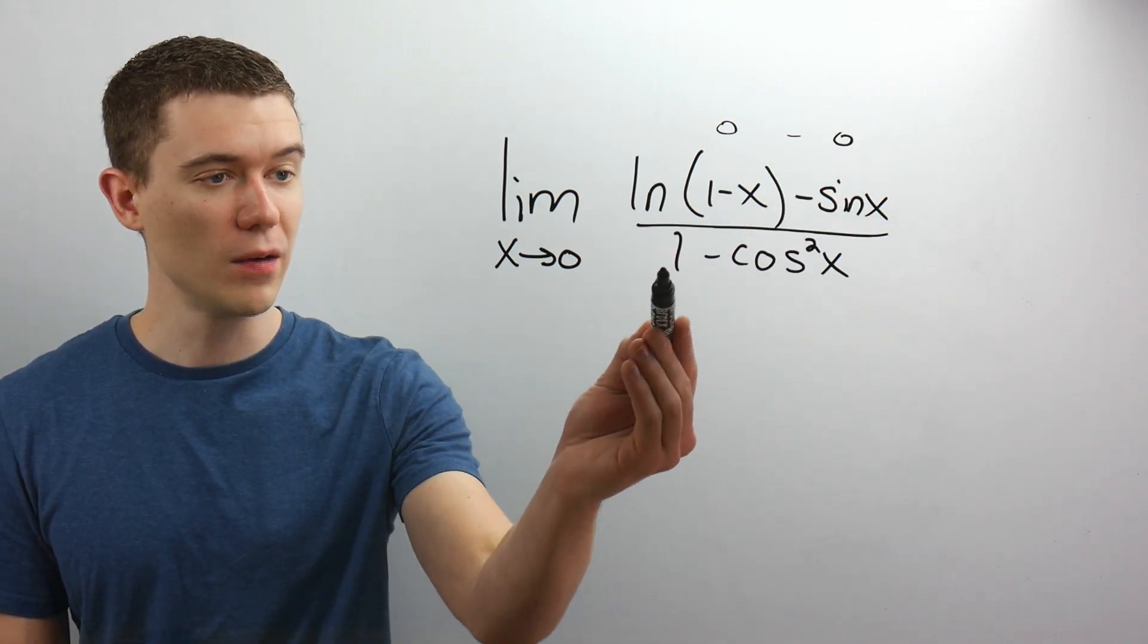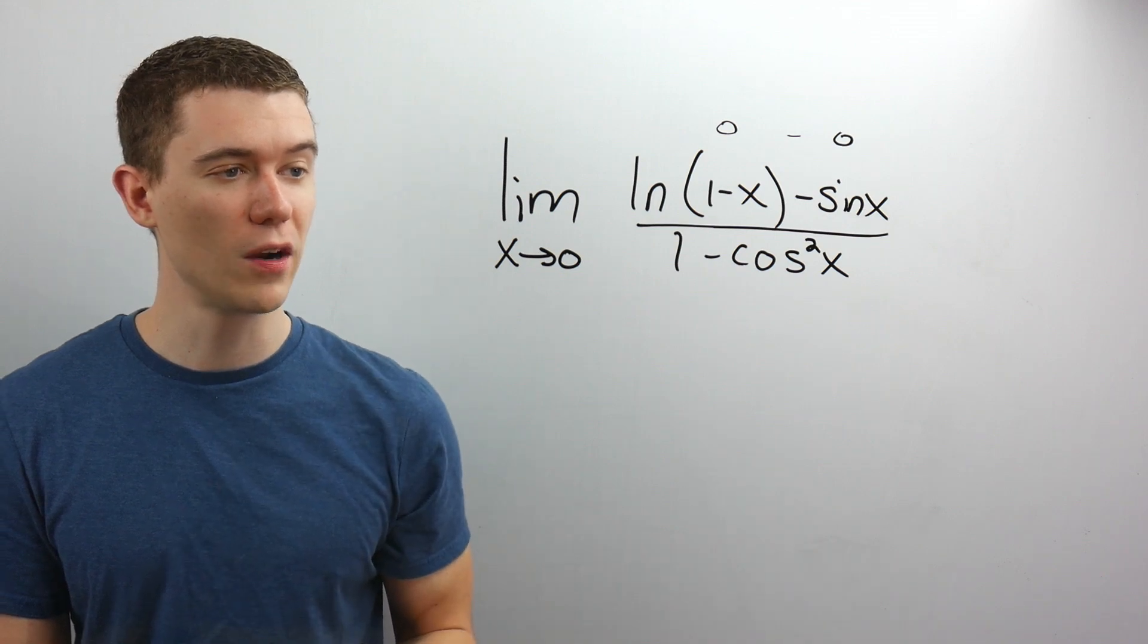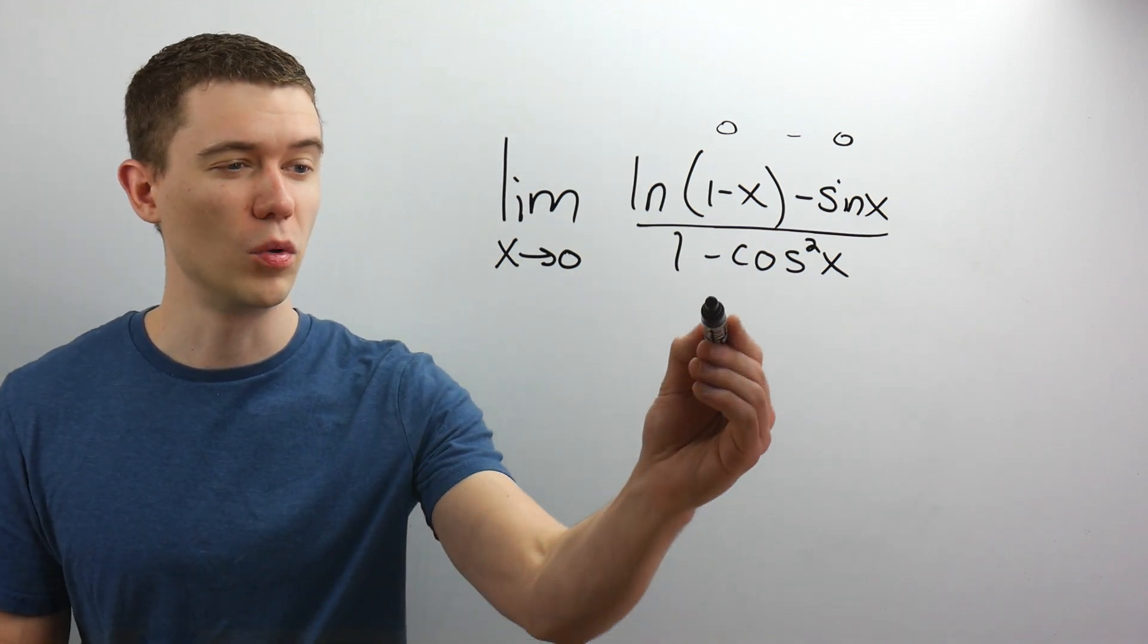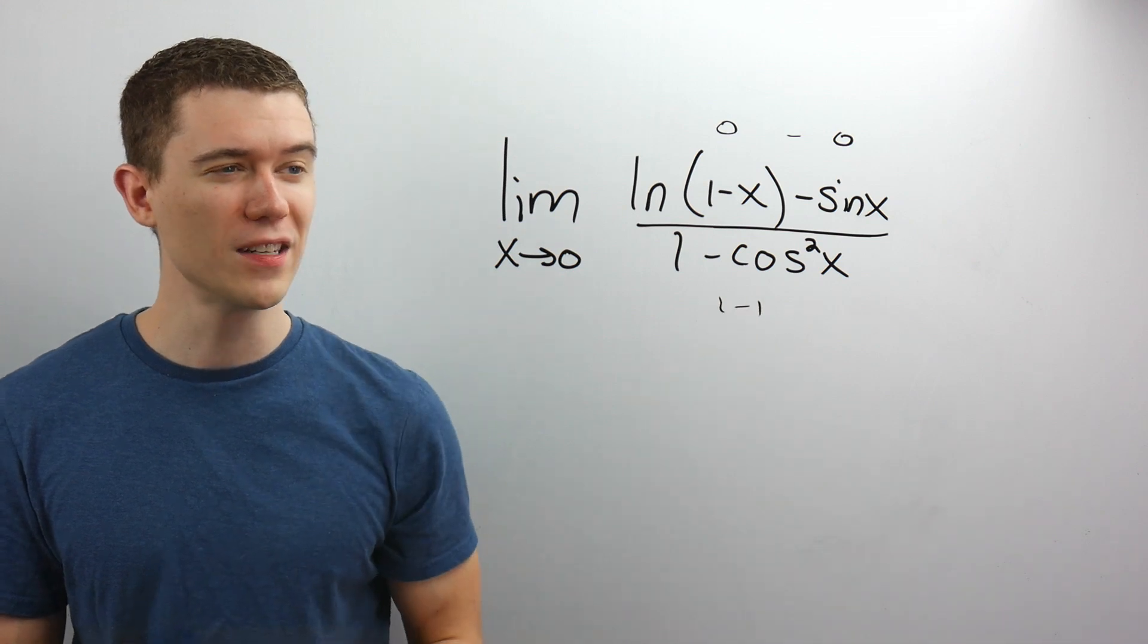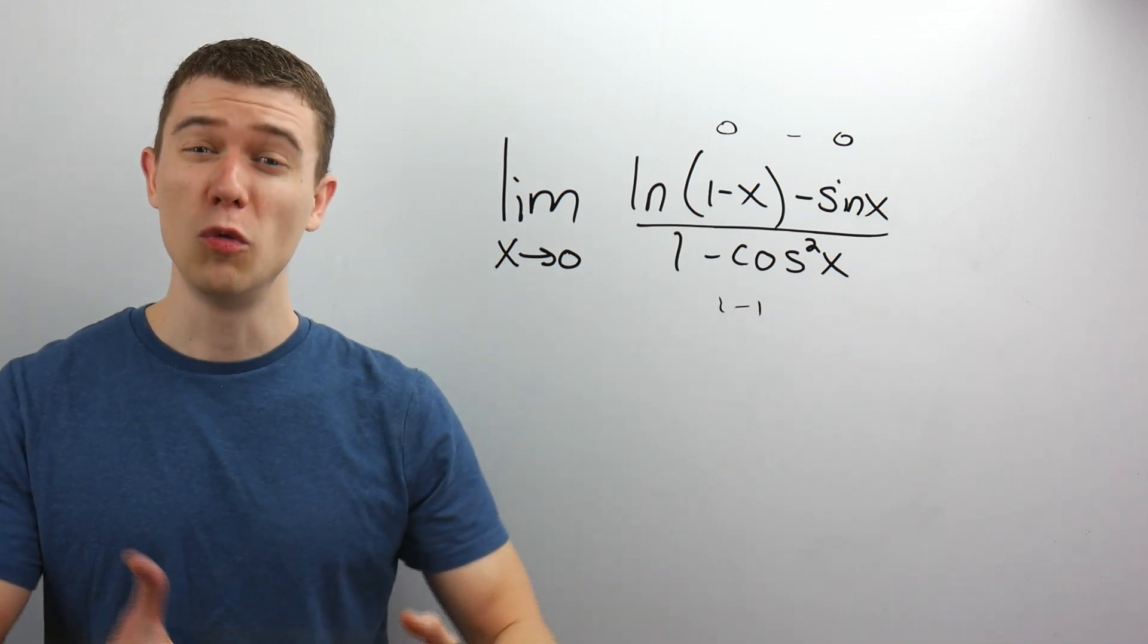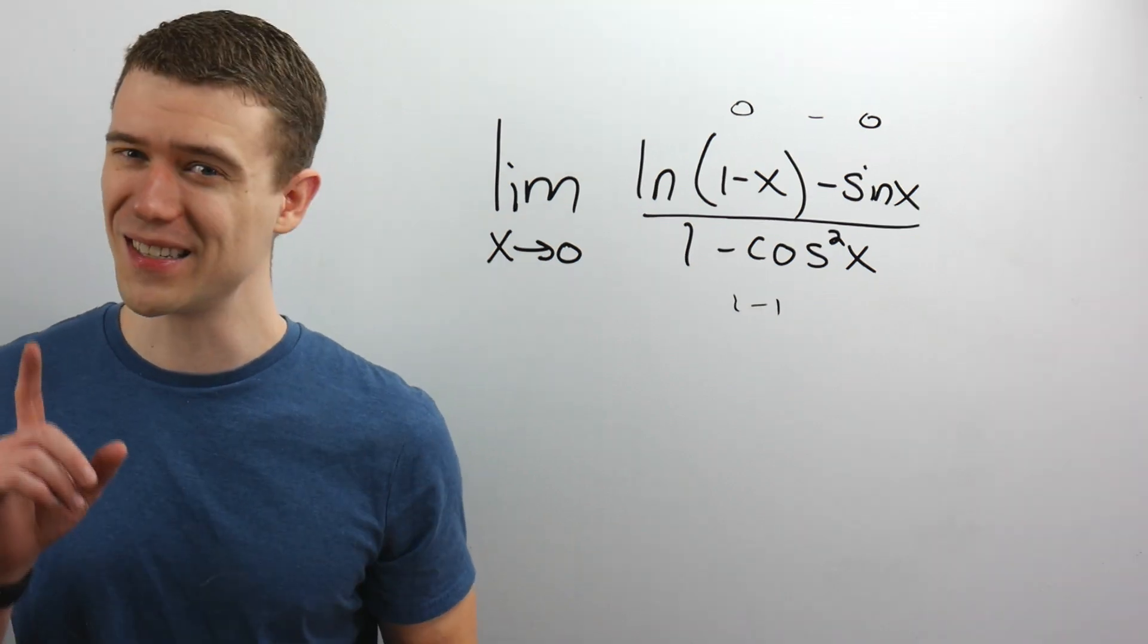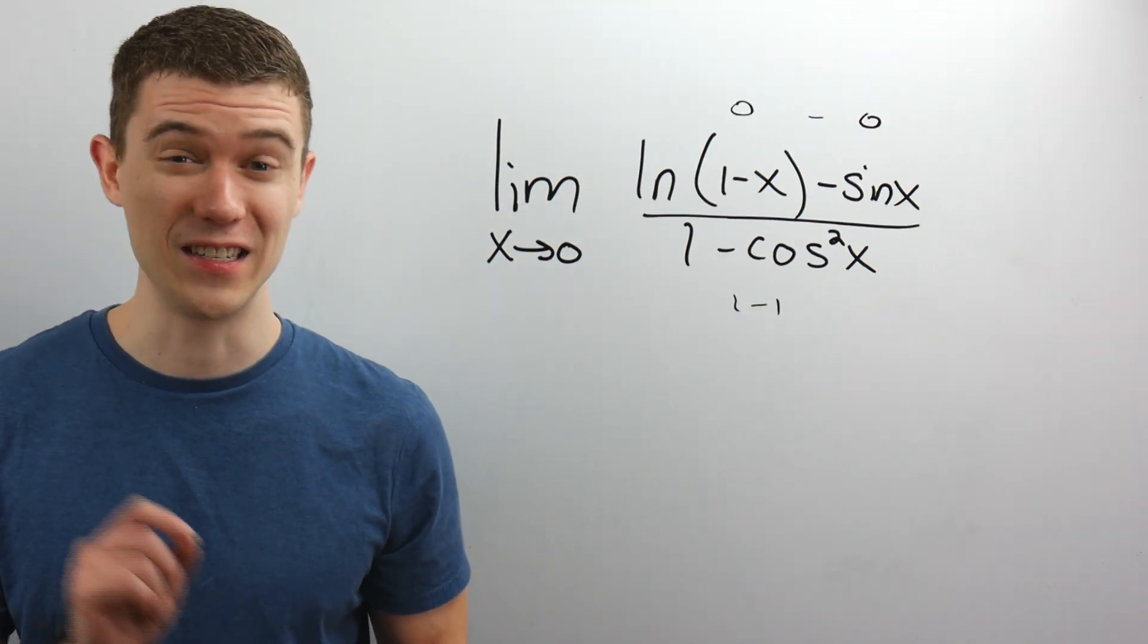And then on the bottom, we'd have 1 minus cosine squared of 0. Cosine of 0 is 1 squared is 1. So on the bottom, we'd be getting 1 minus 1. In other words, we'd be getting the indeterminate form 0 over 0. That's not does not exist. That's 0 over 0.